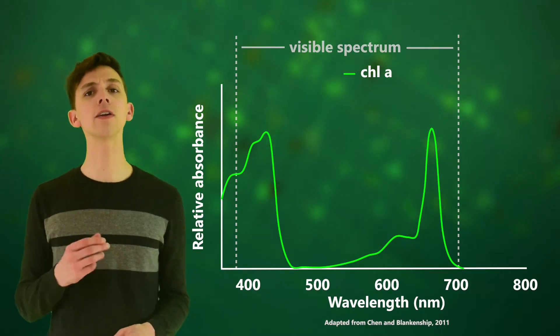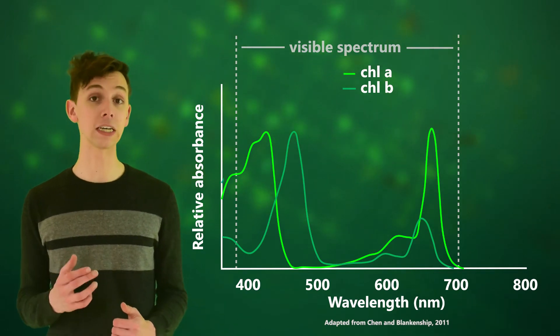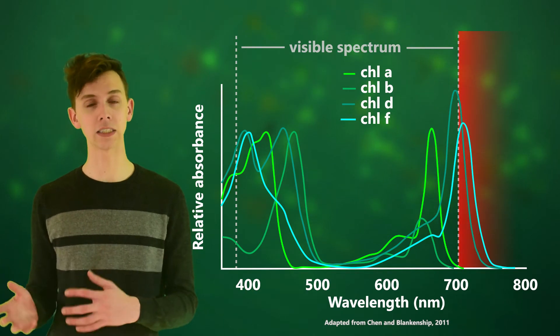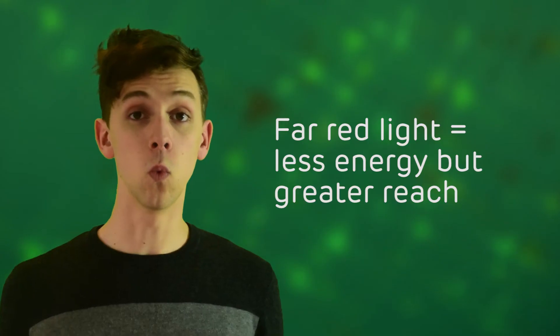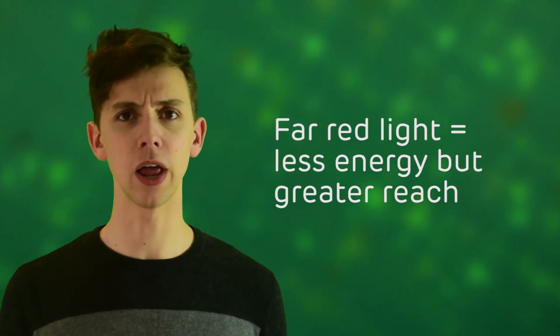It used to be thought that chlorophyll could only utilize light in the visible spectrum, but with the discovery of chlorophyll D and F in photosynthetic bacteria, which utilize far red light, this assumption was overturned. While far red light has less energy than visible light, it can reach areas that visible light cannot.